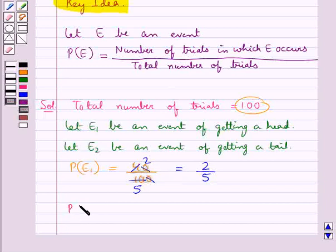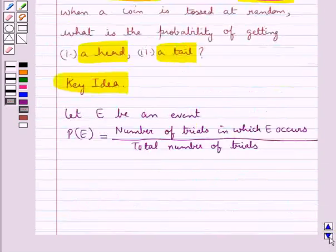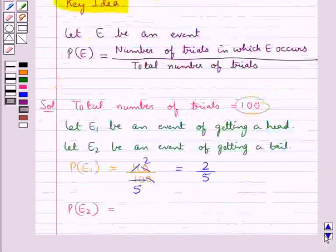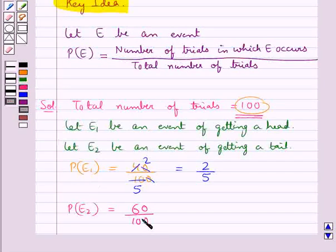Now the probability of getting a tail is equal to the number of trials in which E2 occurs, which is 60, since we get tail 60 times. So this is equal to 60 upon 100, which gives us 3 upon 5 as the probability of getting a tail.